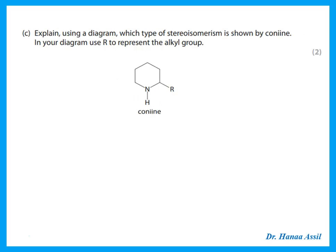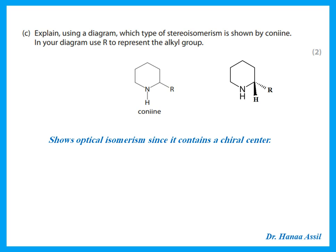The type of stereoisomerism shown by conine is optical isomerism. The carbon bearing the R group has four different groups attached, making it a chiral centre. This gives two non-superimposable stereoisomers (optical isomers). The diagram should show the two mirror-image structures using R to represent the alkyl group.